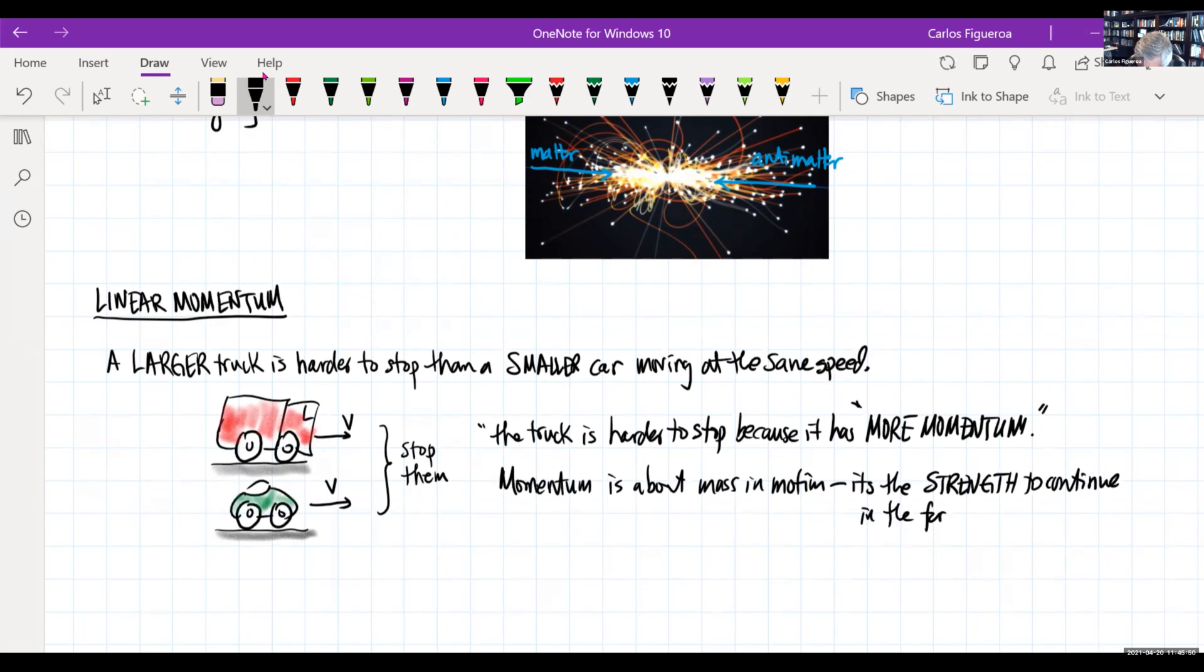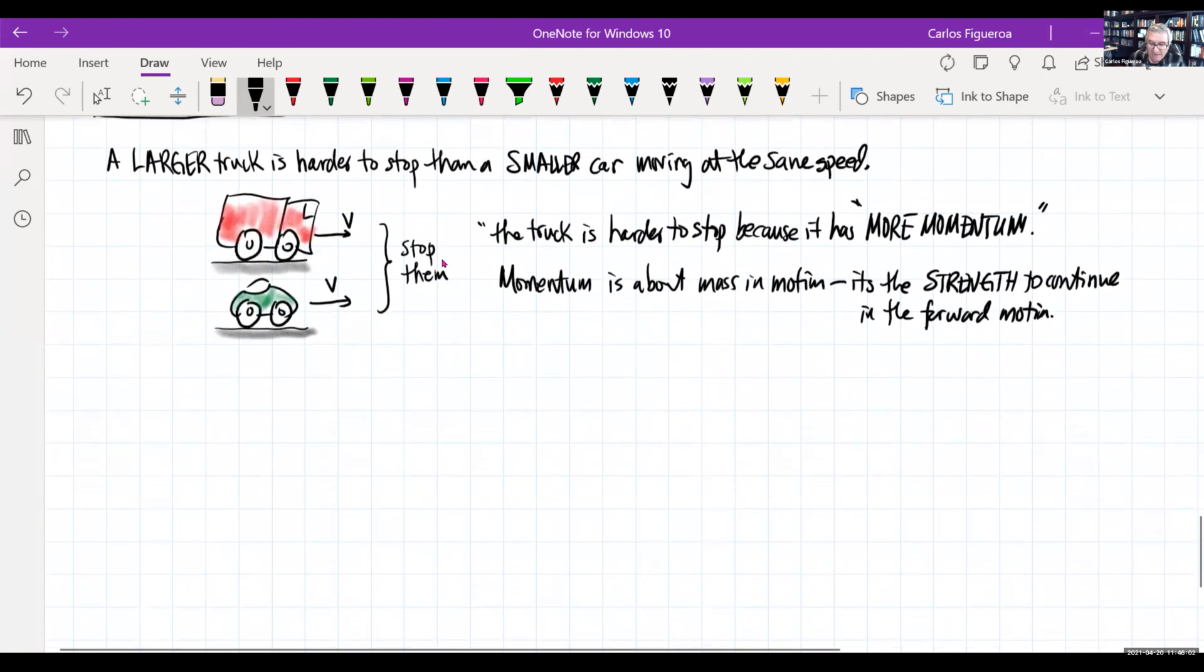to continue in the forward motion. That might be a better statement, but we have not defined momentum yet. So I don't want to get ahead of myself, but that's what I tried to explain to my young son at the time, that it's about the strength of this thing wanting to continue to move forward. So clearly momentum has to depend on mass and it has to depend on speed. We could then go in and define momentum.